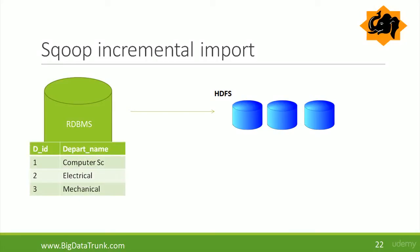Let us take one example. We have a department table with three rows — department ID 1, 2, and 3. This data we are going to import into HDFS, and in HDFS we now have three records. Now more department table data is coming in and we have two more records in this table, but it is not synchronized with the HDFS records.